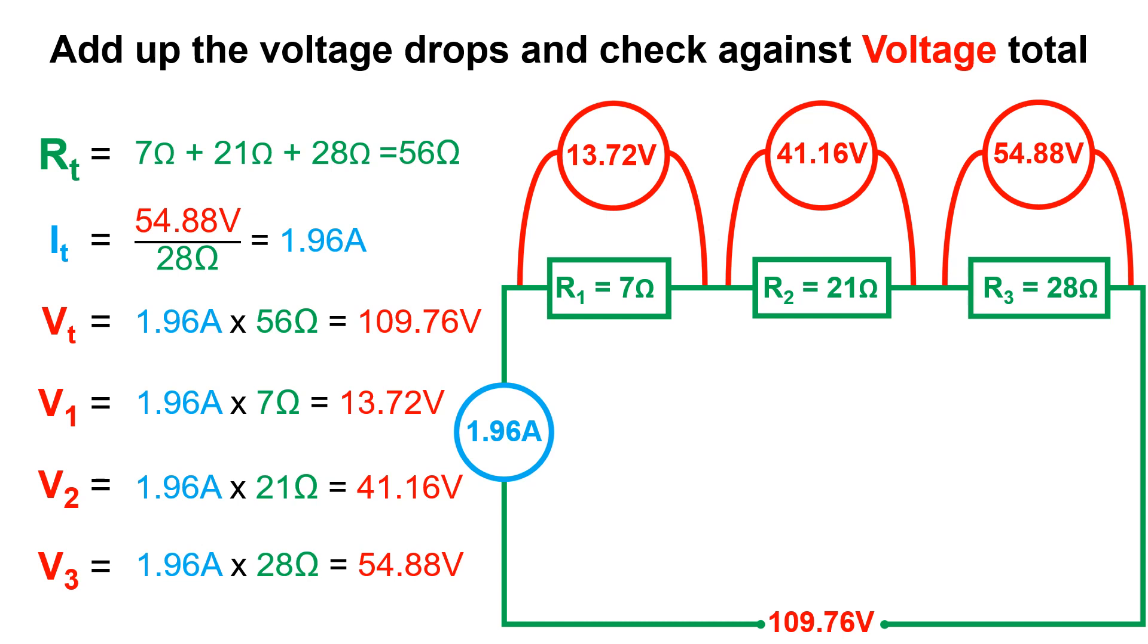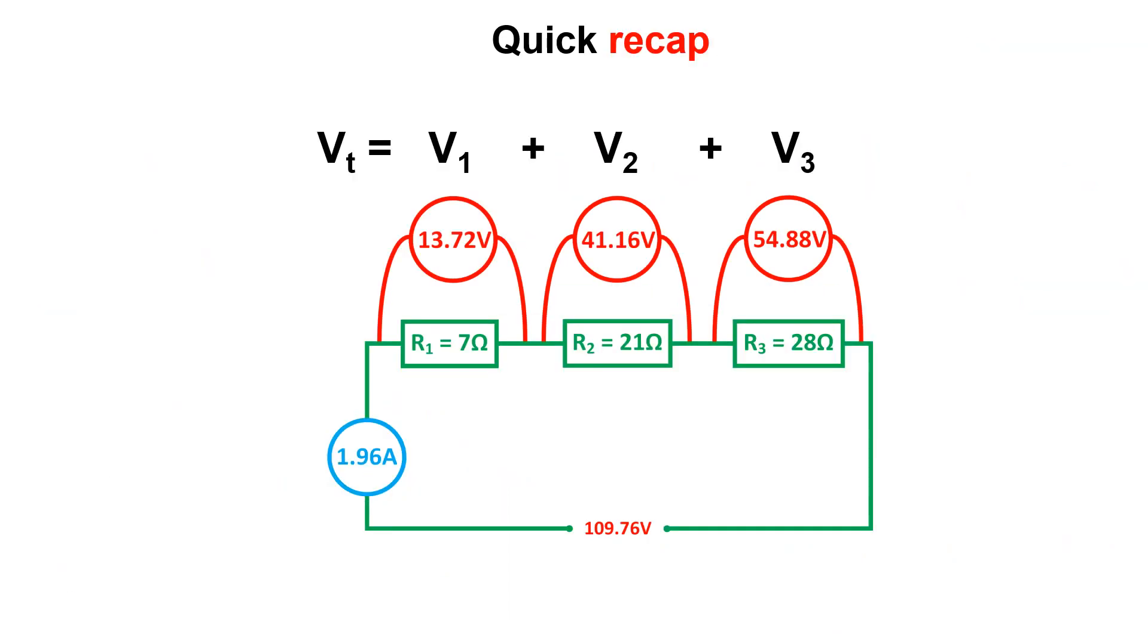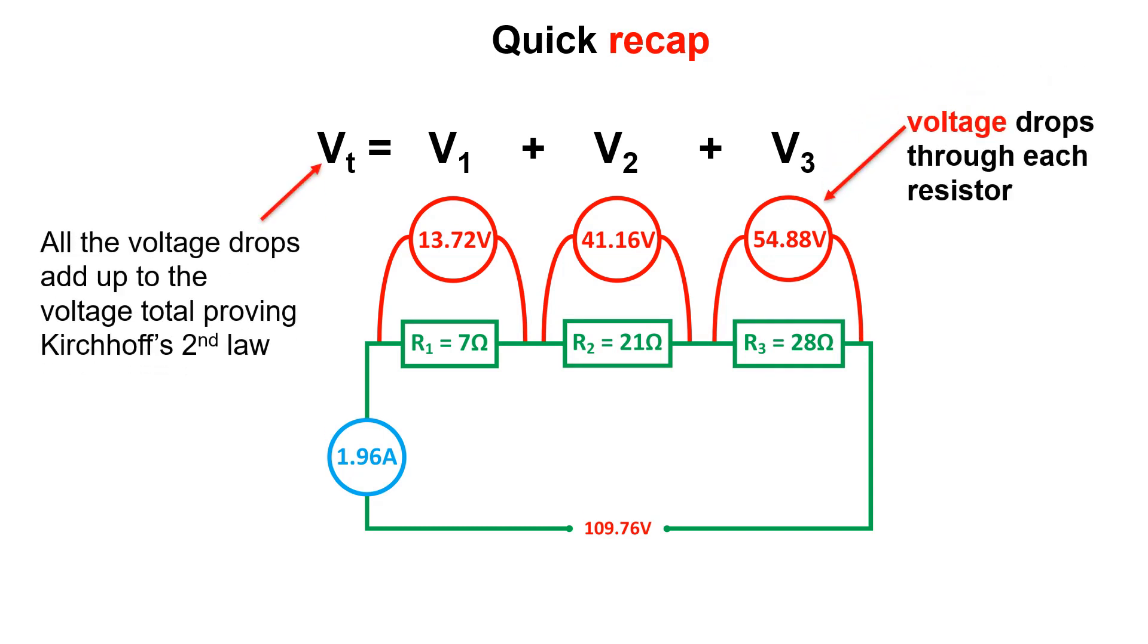Finally we can then check our calculations are correct by adding up our individual voltage drops and checking this against the voltage total. 13.72 volts plus 41.66 volts plus 54.88 volts equals 109.76 volts. So, a quick recap. Each resistor has a voltage drop across it. All the voltage drops add up to the voltage total proving Kirchhoff's second law. And current in a series circuit stays the same as there are no other paths for it to take so once you have the current total you can apply it to every part of the circuit.